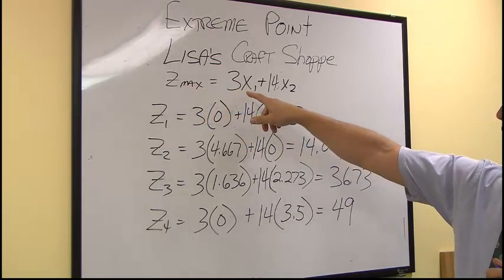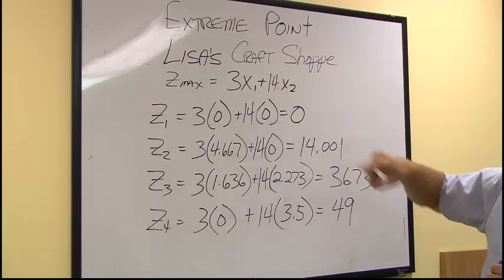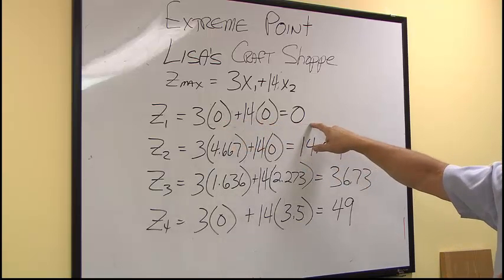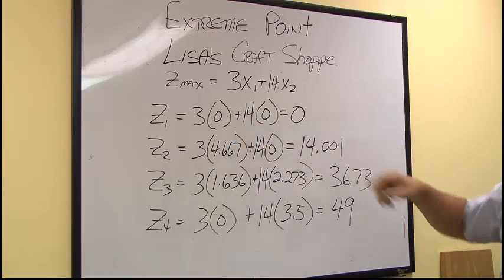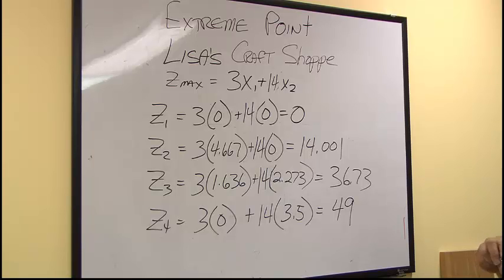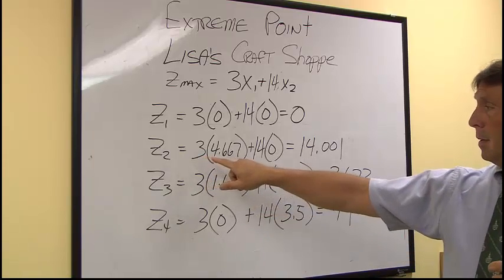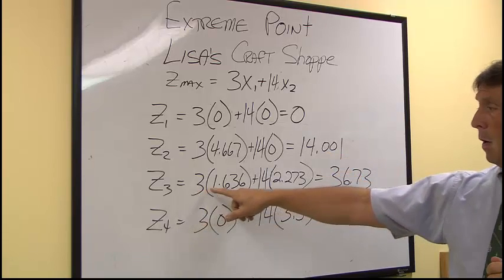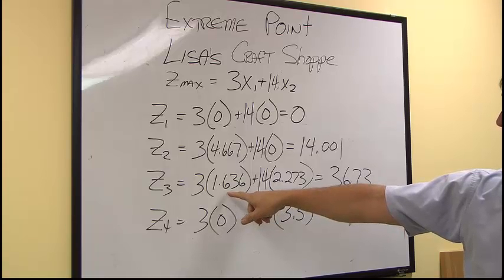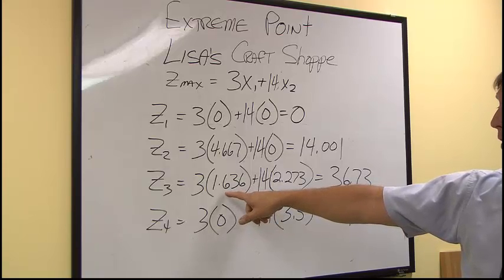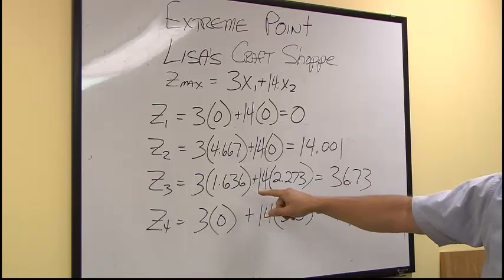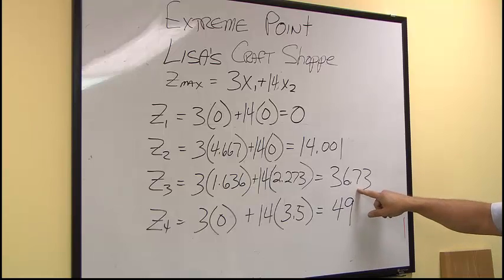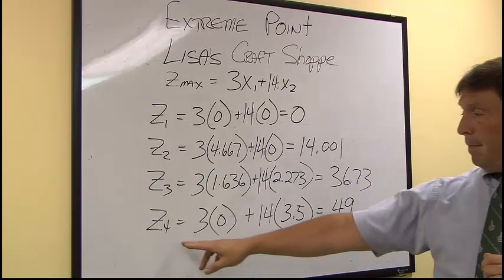So our objective function, for our first point at the origin, zero, zero. For our x1, this is the intersection of the two lines. And finally, we have the x2 axis intercept.